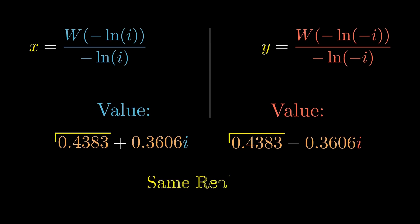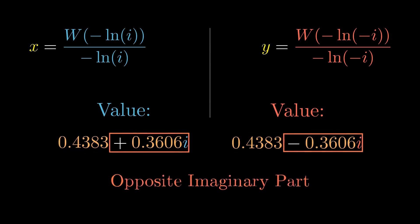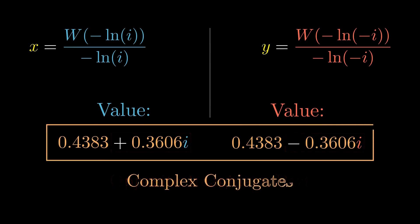Notice something remarkable. They share the same real part, but their imaginary parts have equal magnitude and opposite signs. This is not a coincidence. Changing the sign of the logarithm's angle reflects the solution across the real axis.